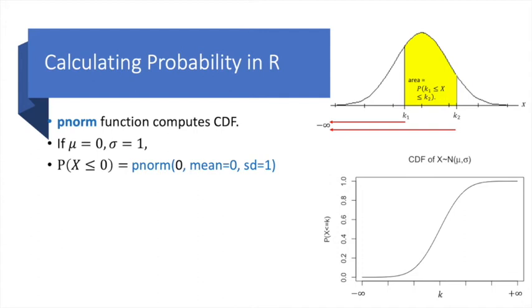So we do that and the answer is 0.5. Are you surprised? You shouldn't be, because remember we said that the total area equals 1 and the normal distribution is symmetric about its mean value. So if mean equals 0, then half the area or probability lies on either side of it.